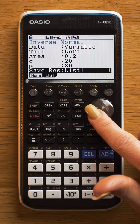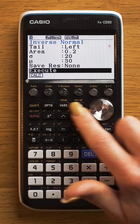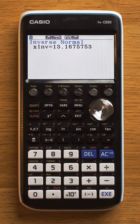You have the option to save the result in the list if you want to, and you can click on execute. It will give you the corresponding x value for that probability.